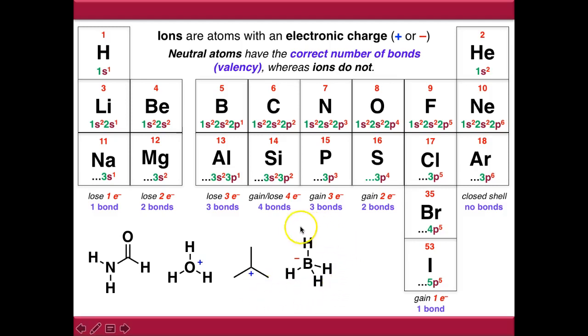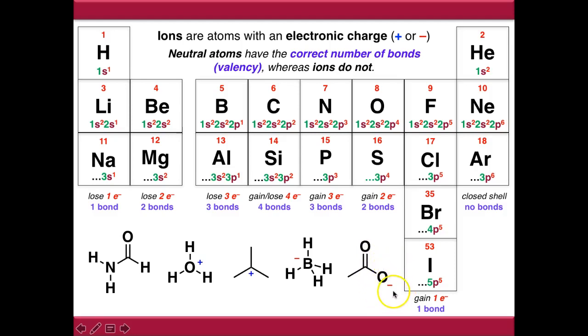In borohydride, the boron atom is making too many bonds, and it has a negative charge as a result. And in acetate, the oxygen is not making enough bonds, and it has a negative charge as a result.